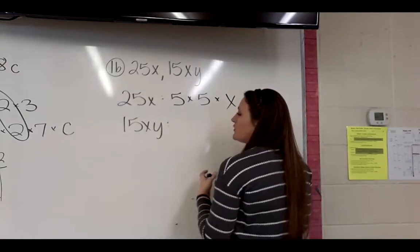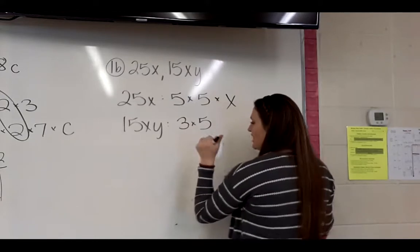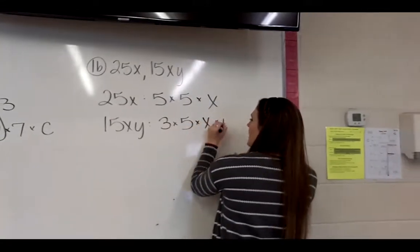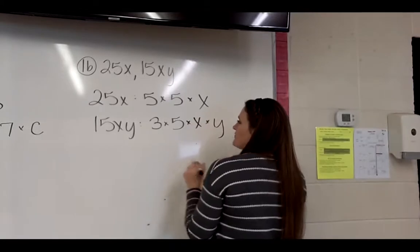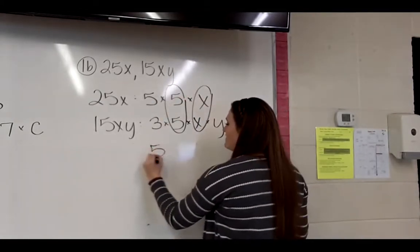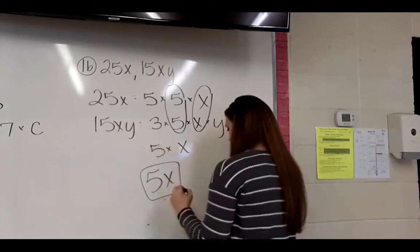15. 2 doesn't go in there. 3 does. 3 times 5 is 15. Those are both primes, so we're good. You're basically just breaking it down into all prime numbers. Then I have times x times y. So I look at everything that they both have. They both have a 5 and an x. 5 times x is just 5x.